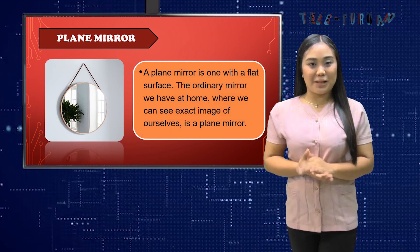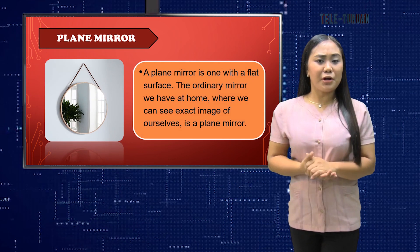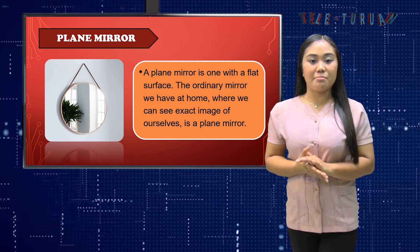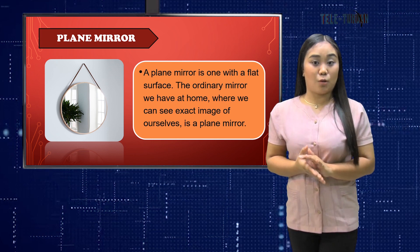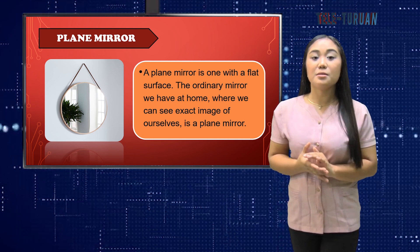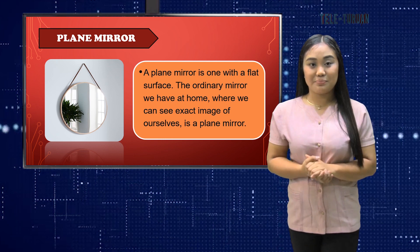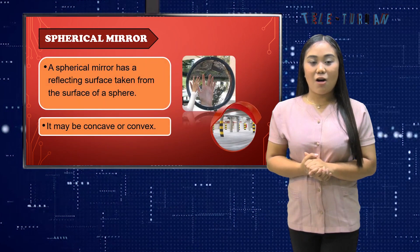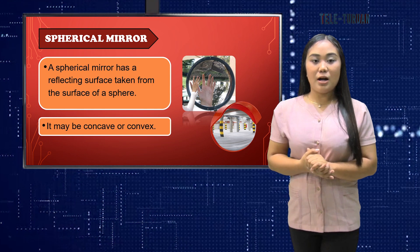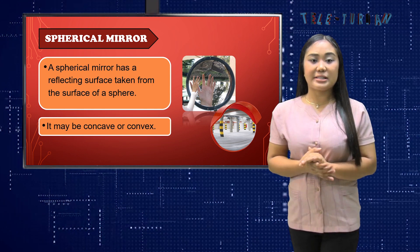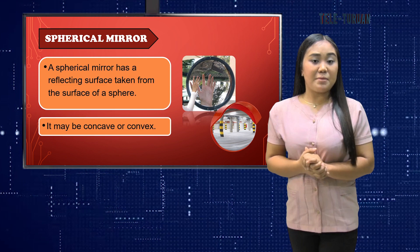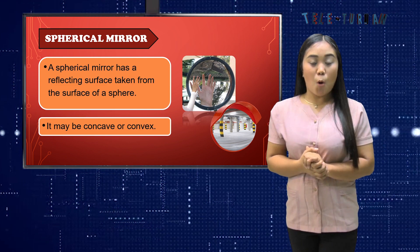A plane mirror is one with a flat surface. The ordinary mirror we have at home where we can see an exact image of ourselves is a plane mirror. A spherical mirror, on the other hand, has a reflecting surface taken from the surface of a sphere. It may be concave or convex.